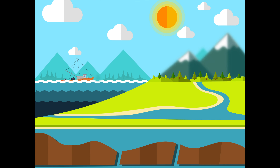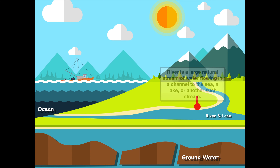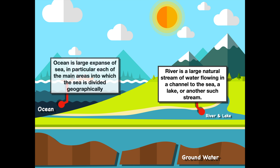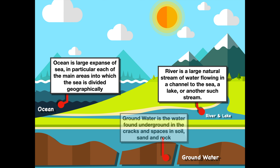Let's look at this diagram to better understand the water cycle. There are three main pools of water that are important for where water originates or flows into: rivers and lakes, oceans, and groundwater. An ocean is a large expanse of sea, a river is a large natural stream that flows into an ocean, and groundwater is found under the cracks in the soil, usually consisting of sand and rock.